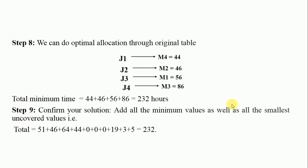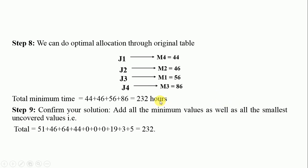You will now go back to the original given table for optimal allocation. Since j1 is assigned to m4, trace j1 under m4 in the original table — you will find 44. J2 under m2 gives 46, j3 under m1 gives 56, and j4 under m3 gives 86. Adding all these values: 44 plus 46 plus 56 plus 86, the total is 232 hours — that is the minimum time it will take to complete the jobs.